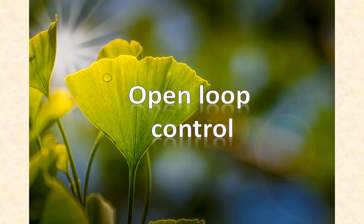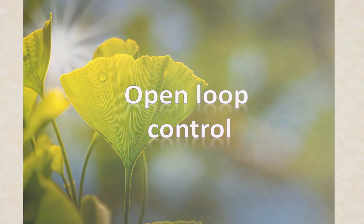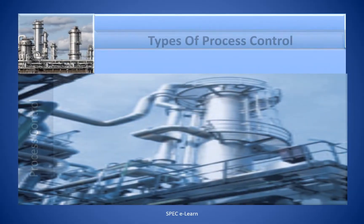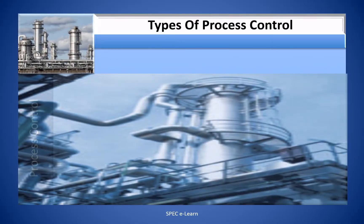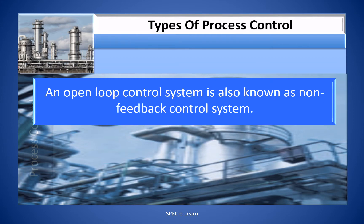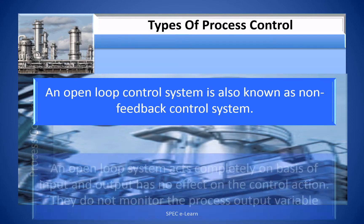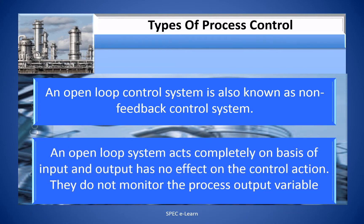First, open loop control. An open loop control system is also known as a non-feedback control system. An open loop control system acts completely on the basis of input, and the output has no effect on the control action. They do not monitor the process output variable.